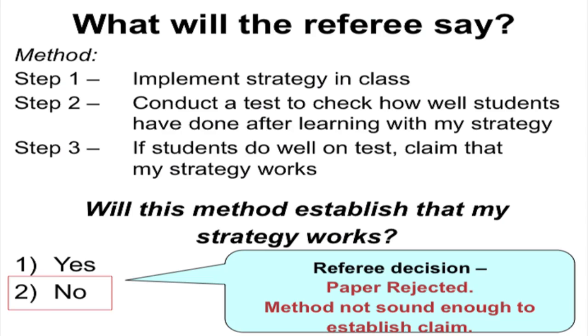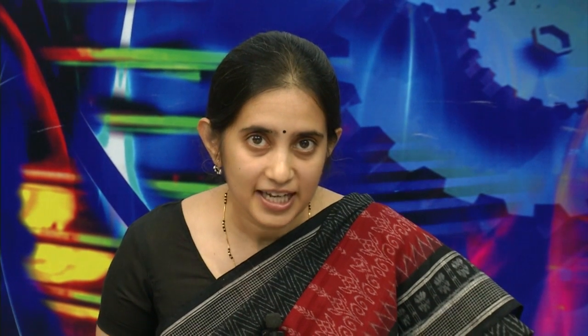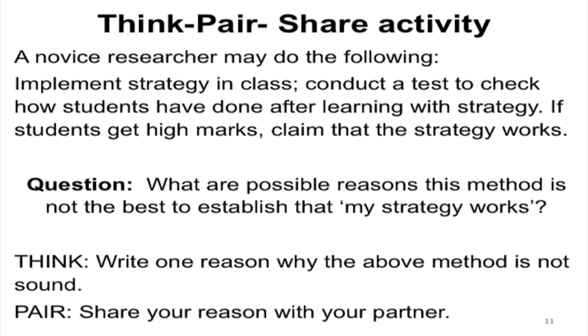The referee will say the paper is rejected — the method to establish the claim is not sound enough in most cases. A strategy that looks reasonably logical to establish a claim will not be accepted as sound by the referee. Let us do this as a think-pair-share activity. The method is: implement my strategy, do a post-test, and if students get high marks, say the strategy works. We need to understand why the referee said no — there is a very logical reason why this is not sound enough.